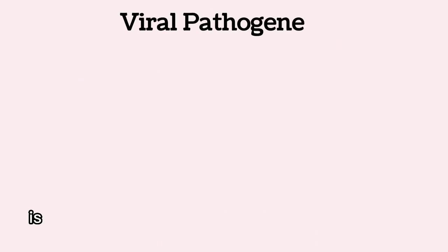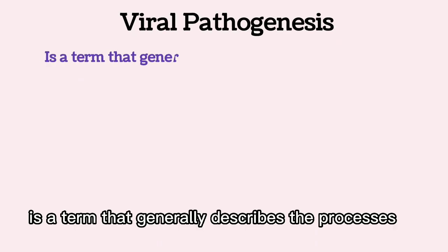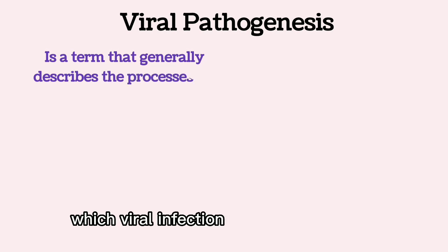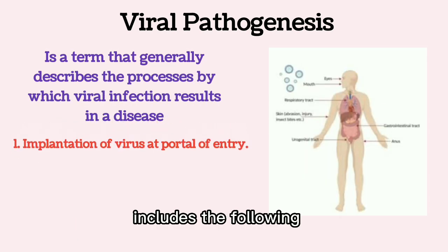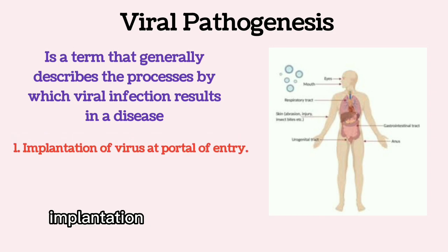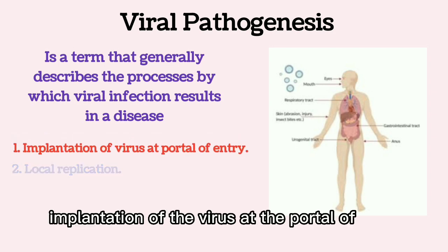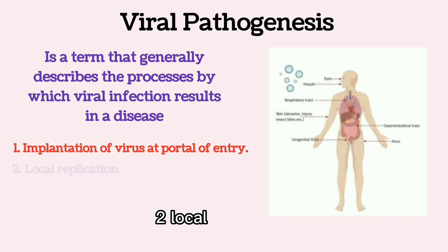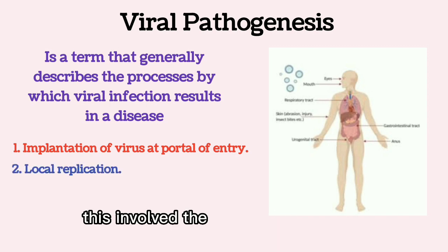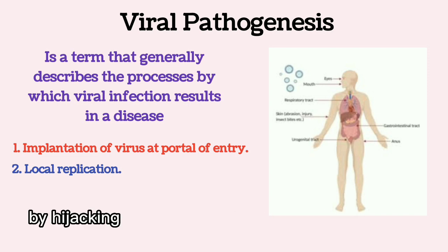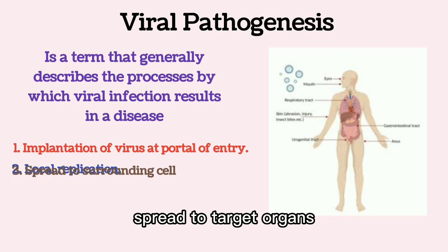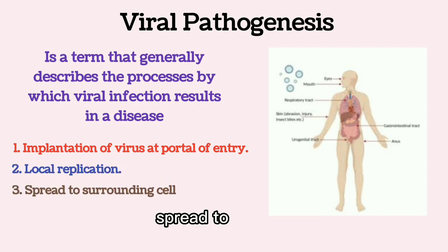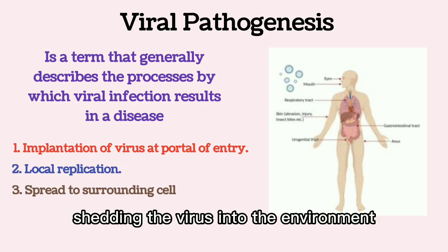Viral pathogenesis is a term that generally describes the processes by which viral infection results in a disease. It includes the following processes: 1. Implantation of the virus at the portal of entry. 2. Local replication, which involves the multiplication of the viral particle through the lytic phase by hijacking the host cell's reproductive mechanism. 3. Spread to target organs. 4. Spread to site of shedding the virus into the environment.